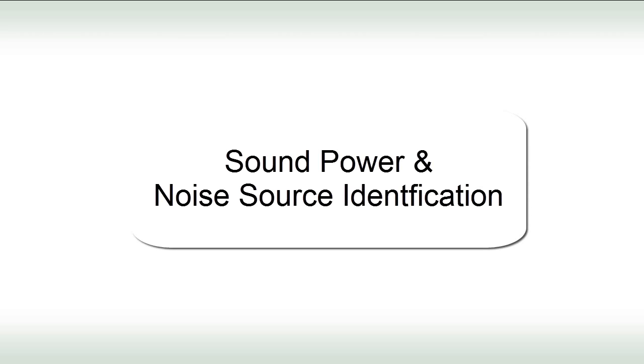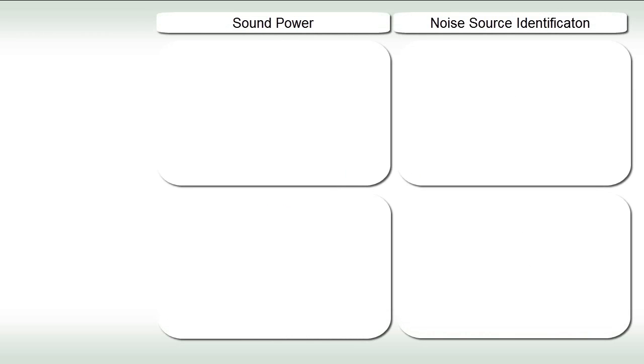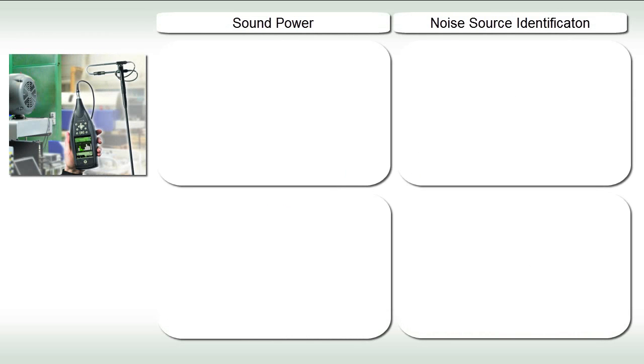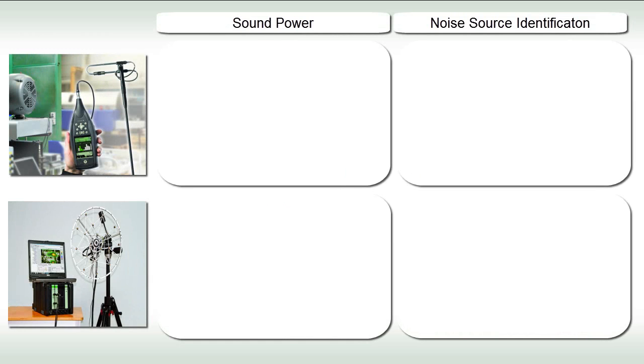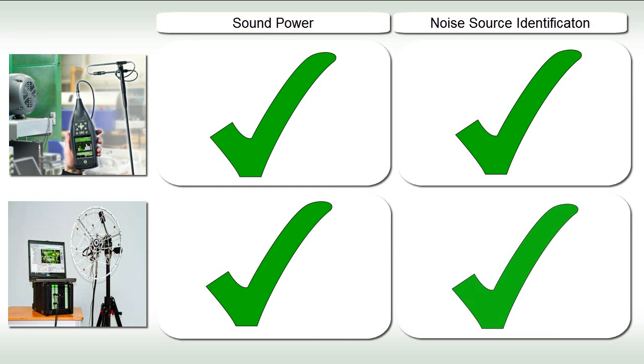Brüel & Kjær can offer a wide range of solutions for sound power determination and noise source identification, based either on a handheld sound level meter or PULSE LAN-XI hardware. These solutions can help industry to fulfill labeling requirements and deliver products with acceptable noise emissions.